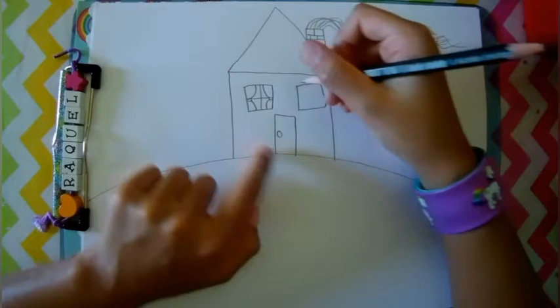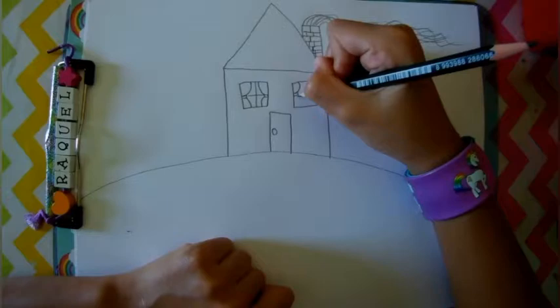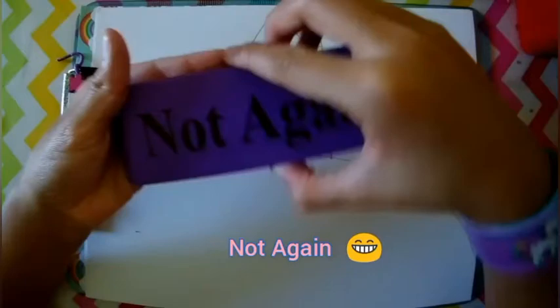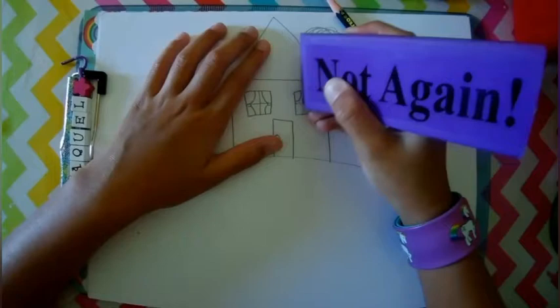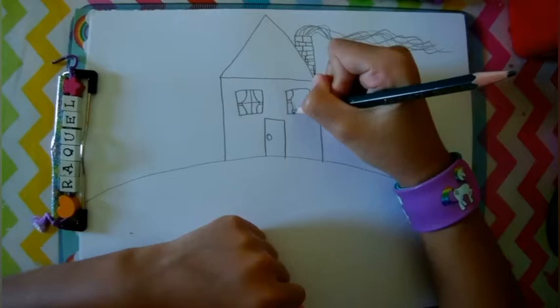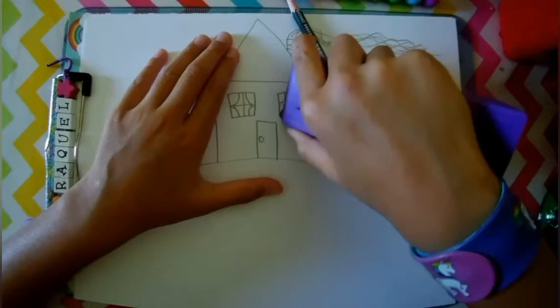And finish off the window. Same on the other window. We messed up and we finally get to use the giant eraser. Well it erases so fast. I did not expect it to be this fast. Does that look like one? No. Let's just copy off from the other side until we get it right.